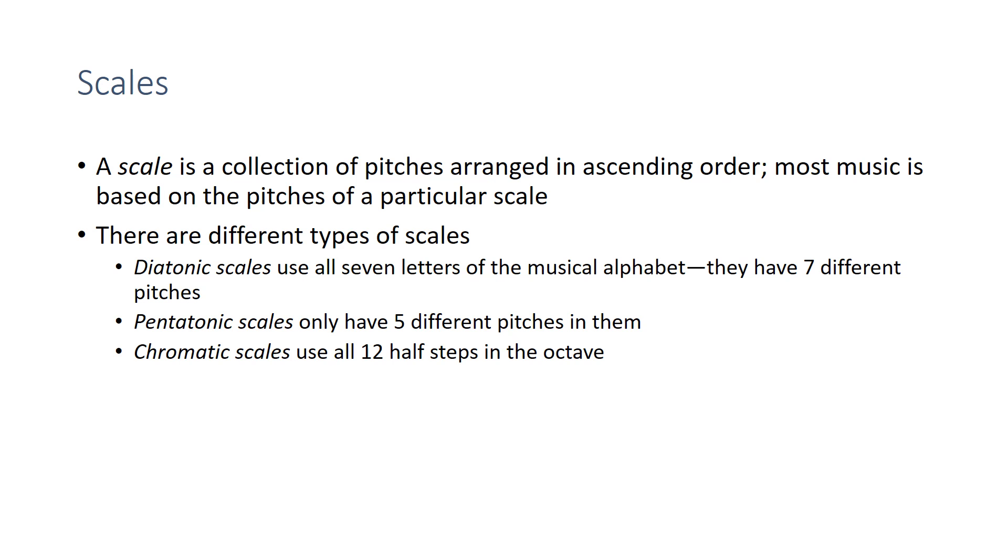The chromatic scale is made up of nothing but half steps and uses all twelve half steps in the octave. So here's a piece by Arnold Schoenberg that uses all twelve of the half steps in the octave equally. If I were to take all of the pitches from this melody and arrange them in ascending order, I would get something like this. So the collection of pitches this piece is based on is the chromatic scale.